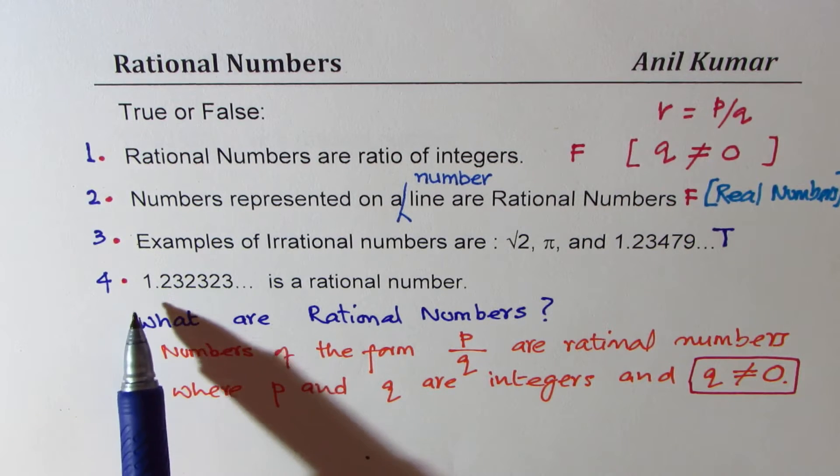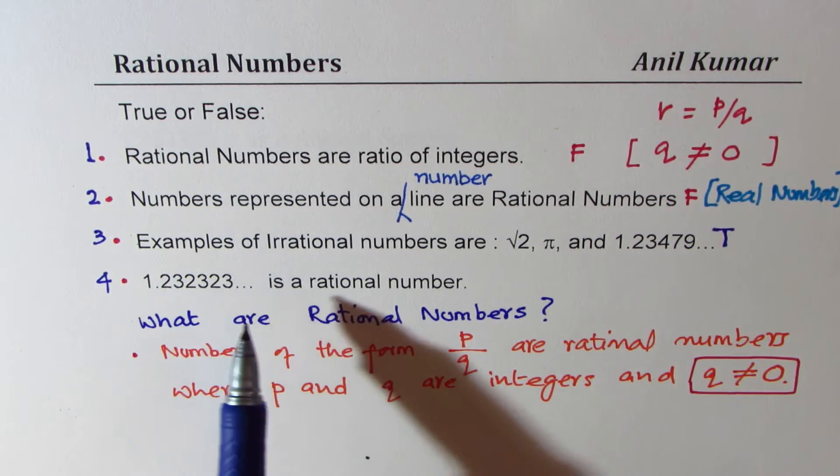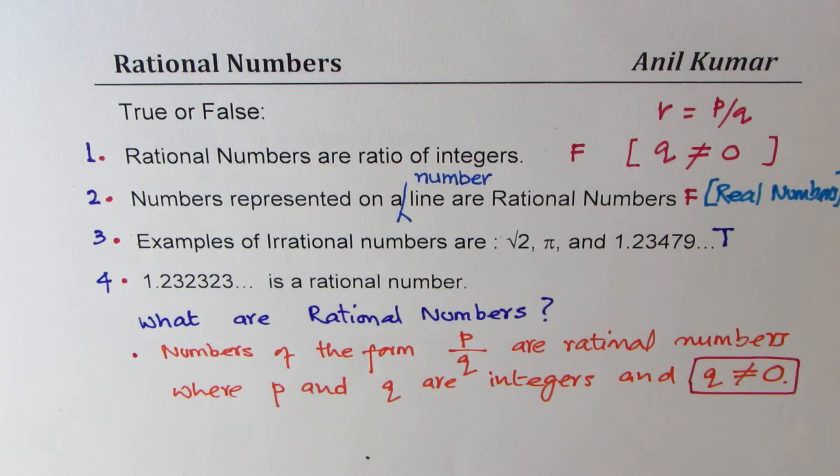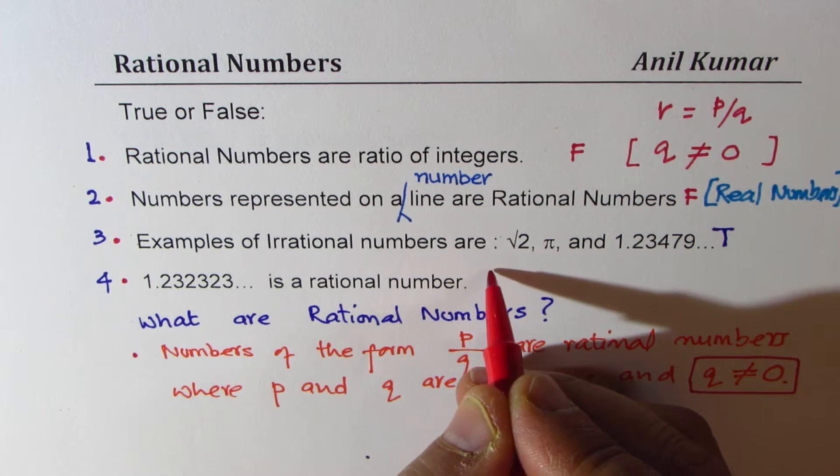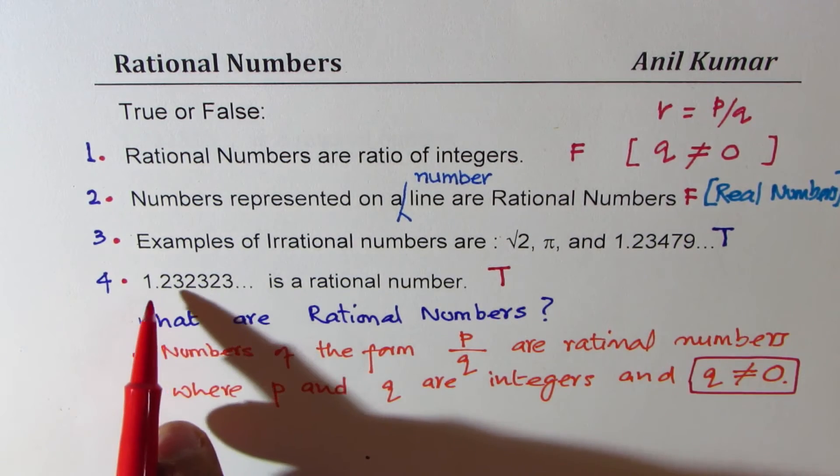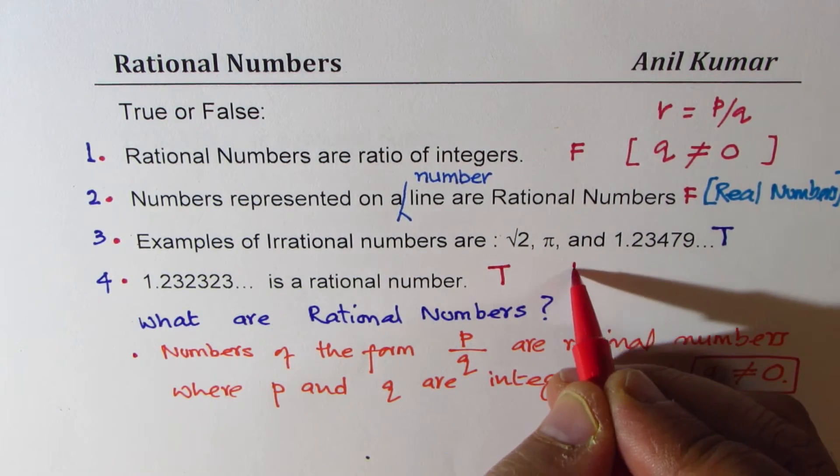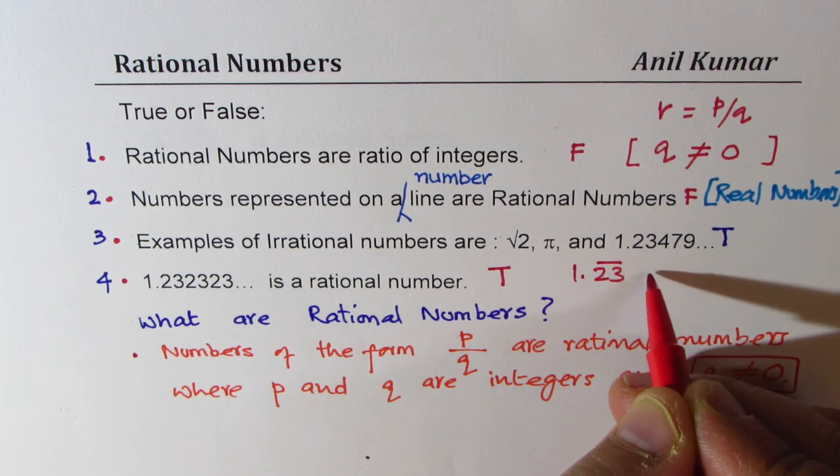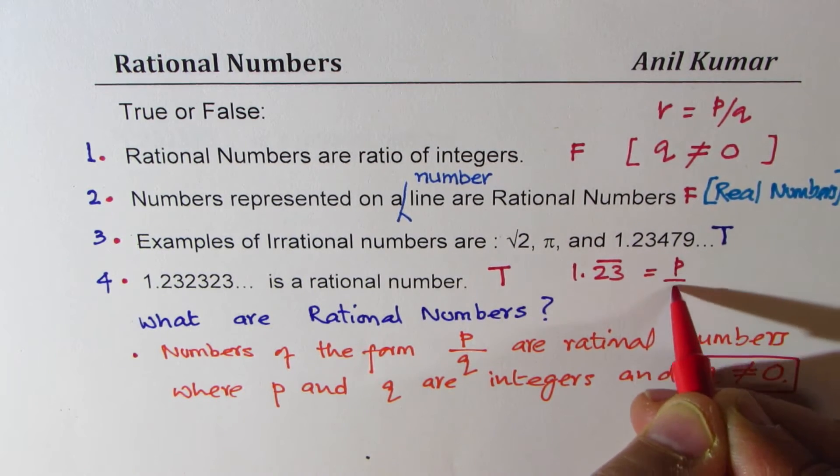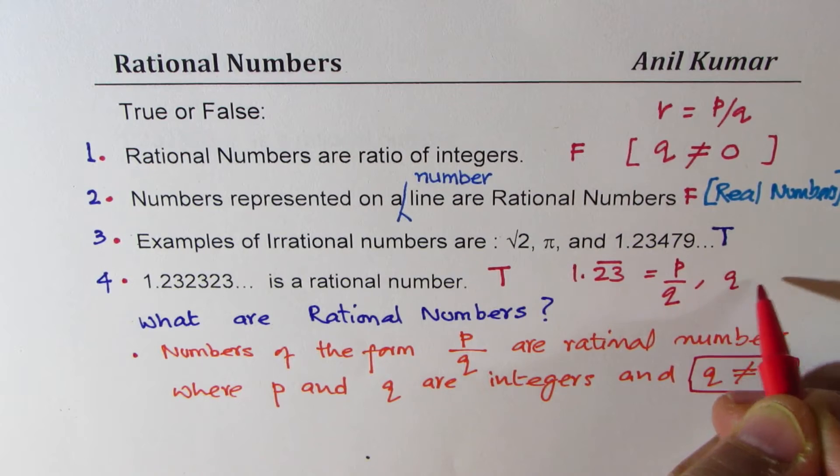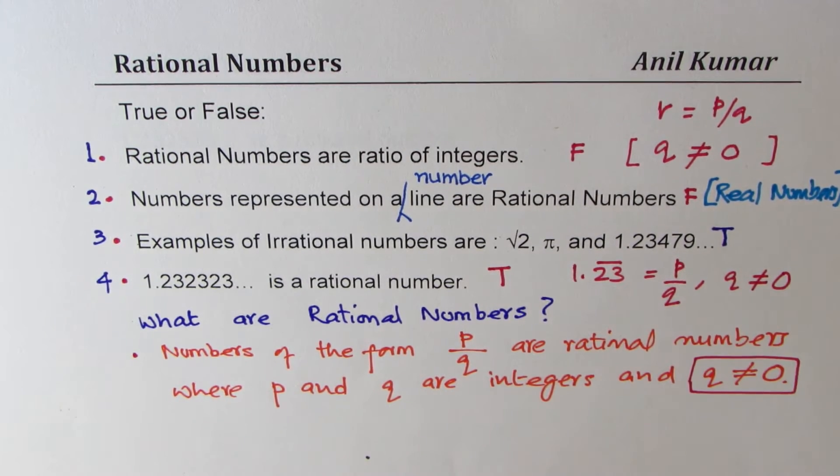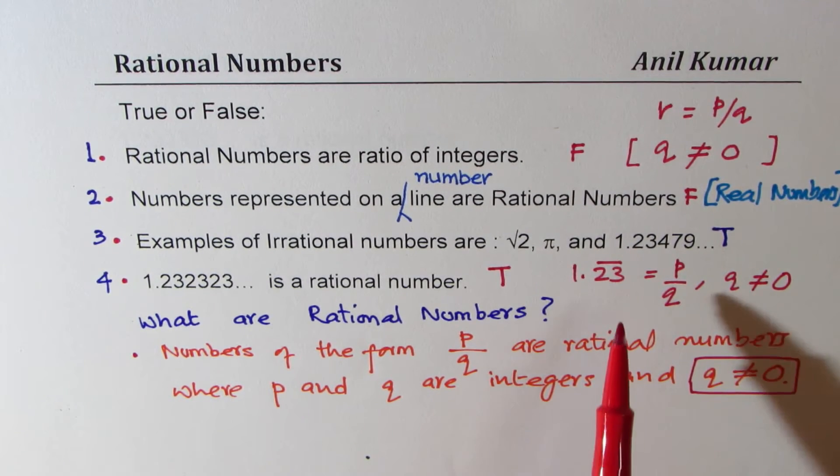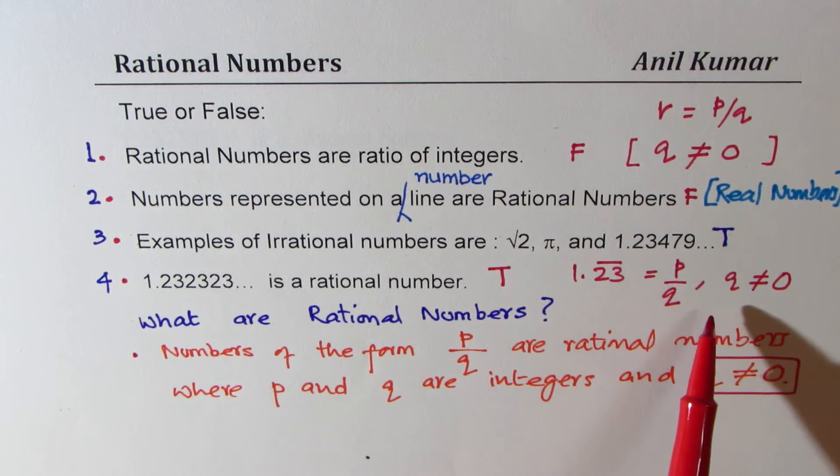Question number 4: 1.232323 is a rational number. How about this statement? Well, this is true. Since you can write this, which I could also write as 1.23 recurring, it repeats in the form of P over Q, where Q is not equal to 0. Well, some of you would like to see how we can do it, right?